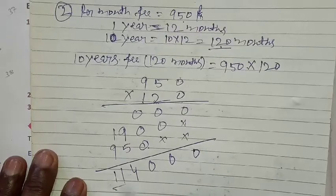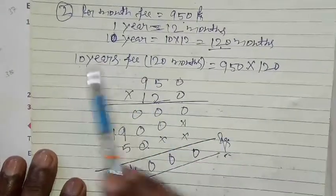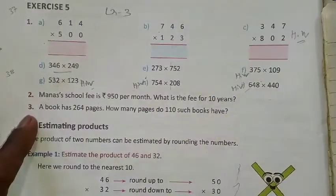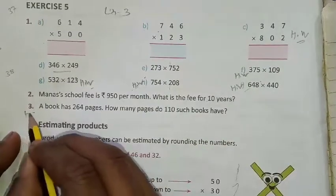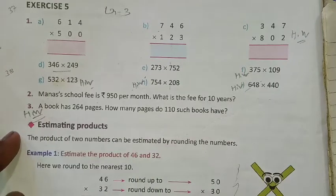So this is the total fee of 10 years. On the basis of same, you will have to solve question number 3. This is the homework and show me as soon as possible. Thank you.